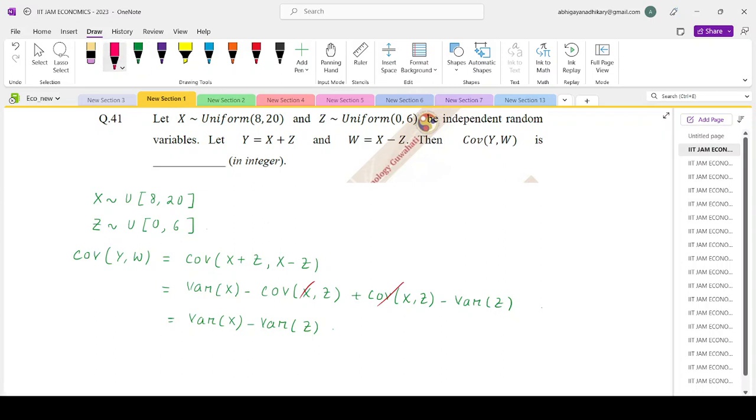Now if you recall the properties of uniform distribution, if X follows uniform (a,b), then the expectation of X is (a+b)/2 and variance of X is (b-a)²/12. So if we use this property,